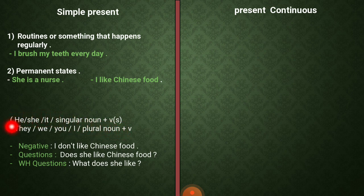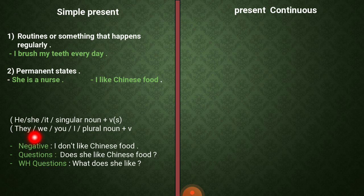So we say for example: the boy plays football every day. أما بحالة كان عندي subject مثل they, we, you, I, or any of the plural nouns, we will have the verb without s.